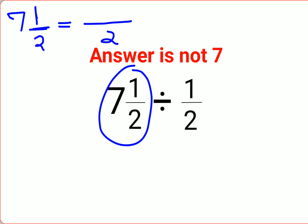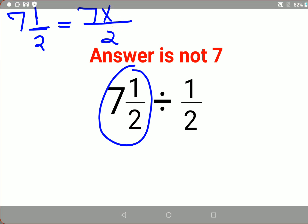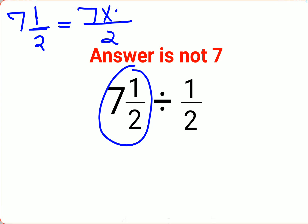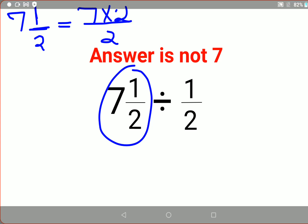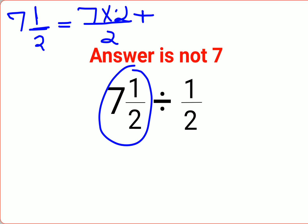In your numerator, what we will do is multiply the integer part, which is 7, with the denominator, which is 2, and then add the numerator, which is 1. So the entire fraction 7 1/2 comes out to be 15/2. Now your numerator is 15/2.